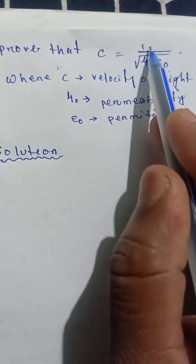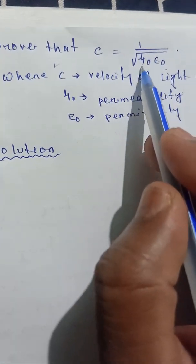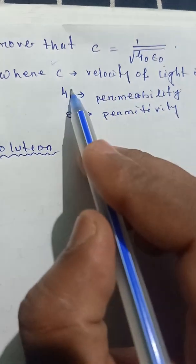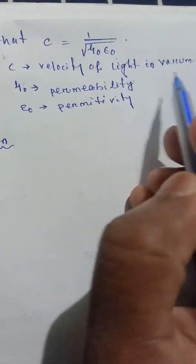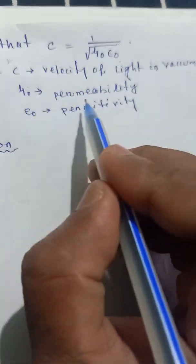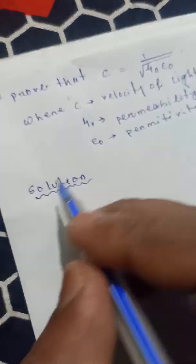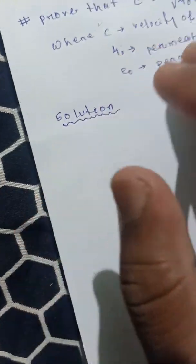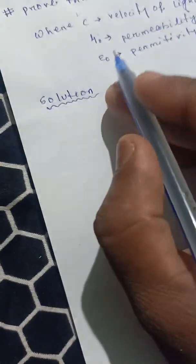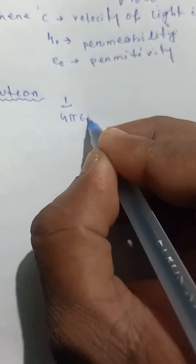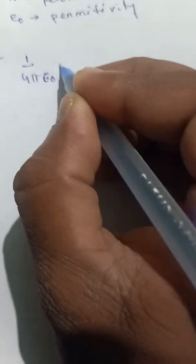We want to prove that c is equal to 1 over root of μ₀ε₀, where c is the velocity of light in vacuum, μ₀ is permeability, and ε₀ is permittivity.